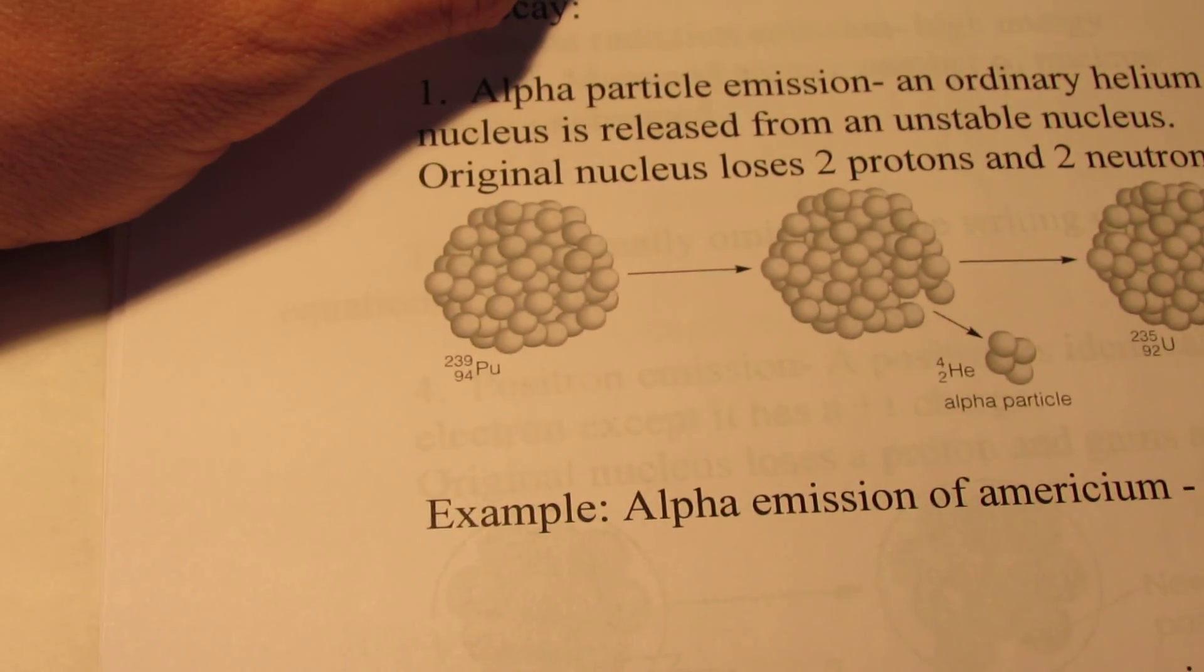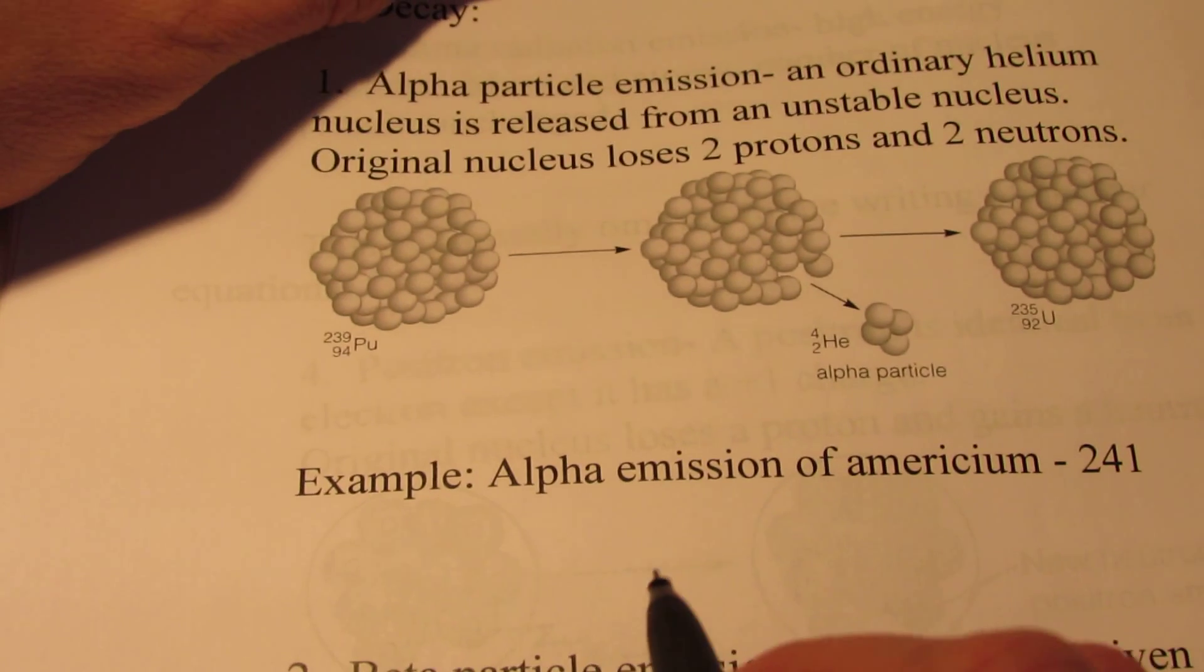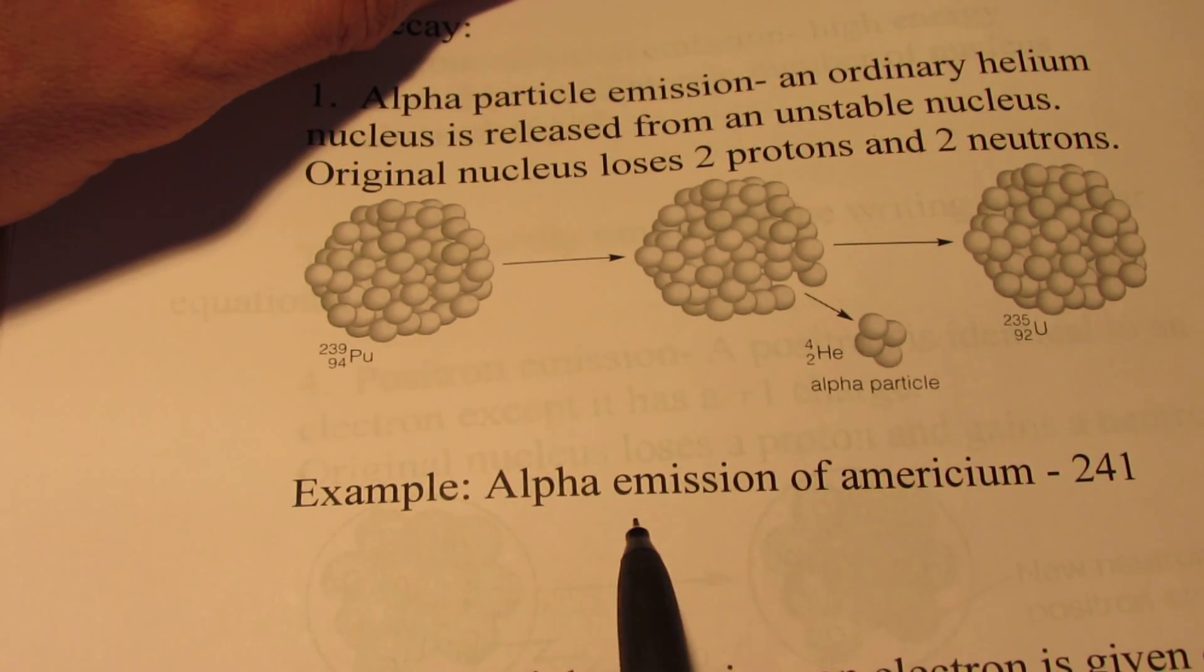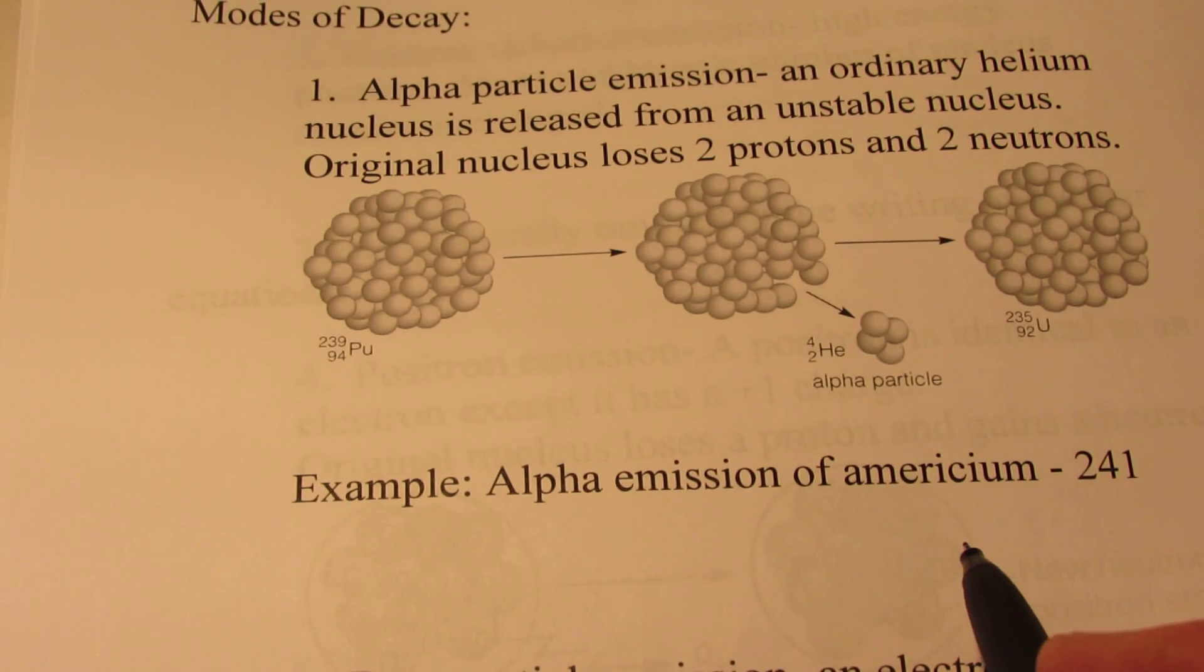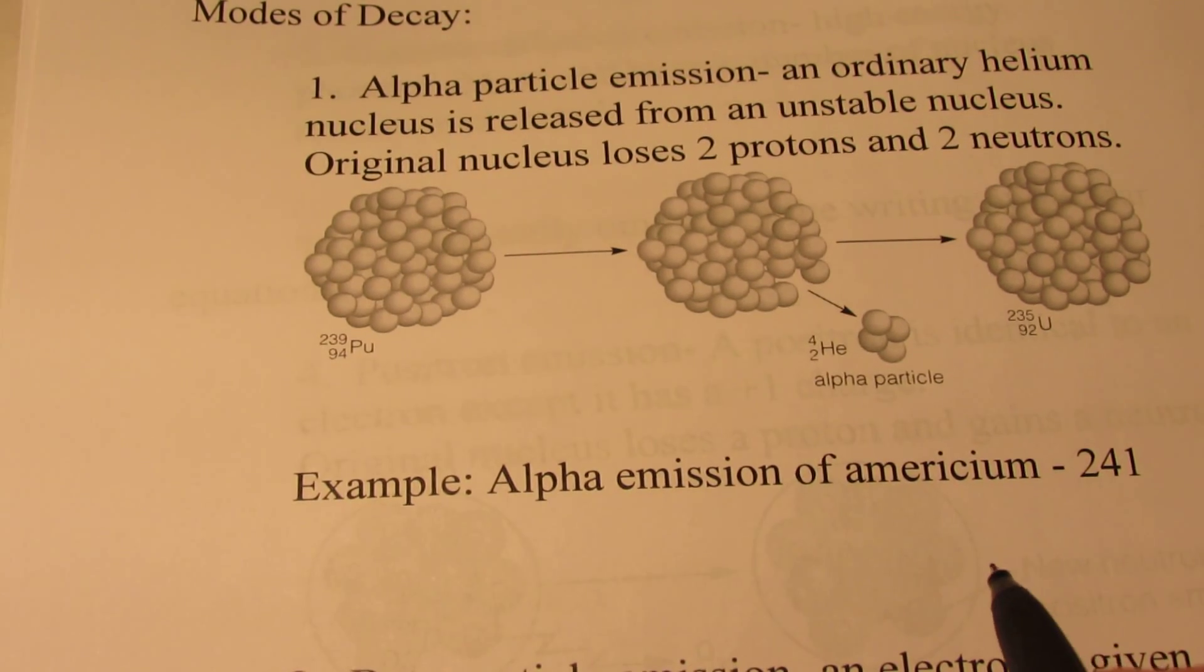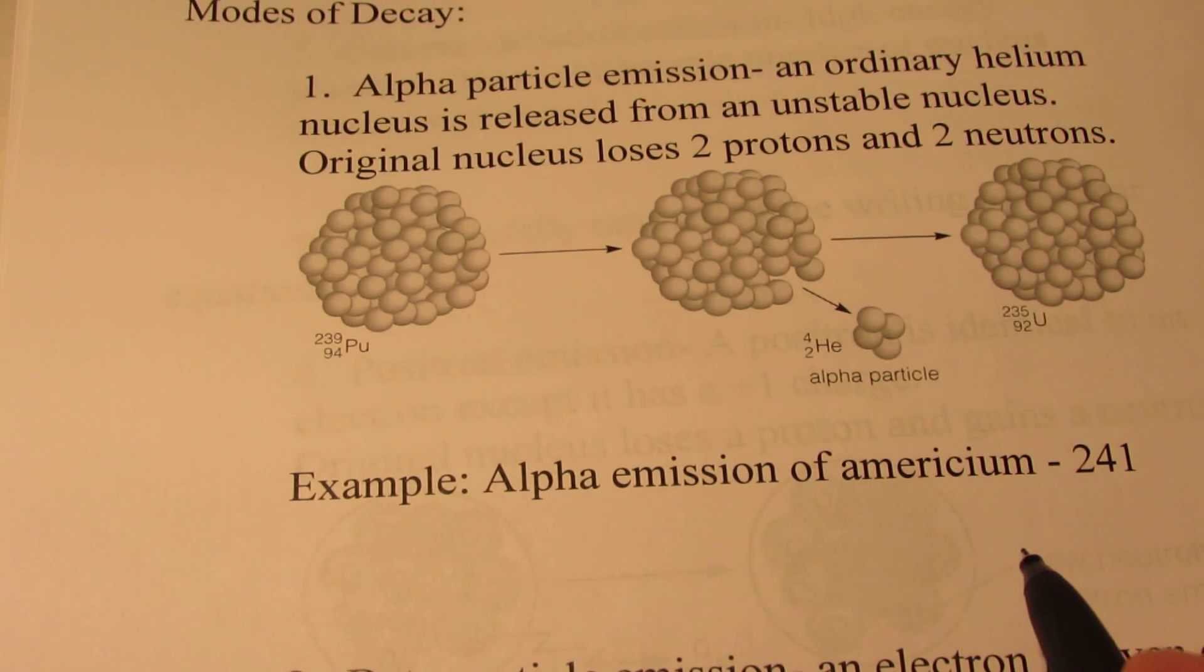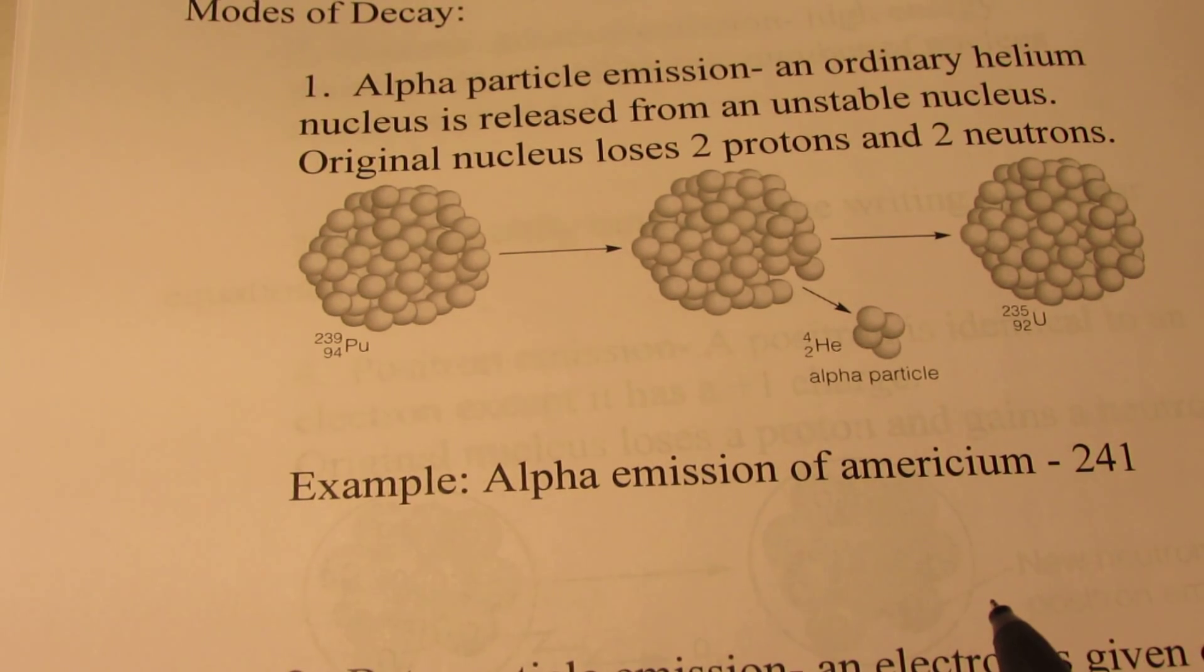Let's try another example. Why don't you take just a second and try determining what the product of an alpha emission from an americium-241 atom would be. Try to figure out what the product nucleus would be. Take just a second to think about that, and then I'm going to do it for you and we'll see how you did.